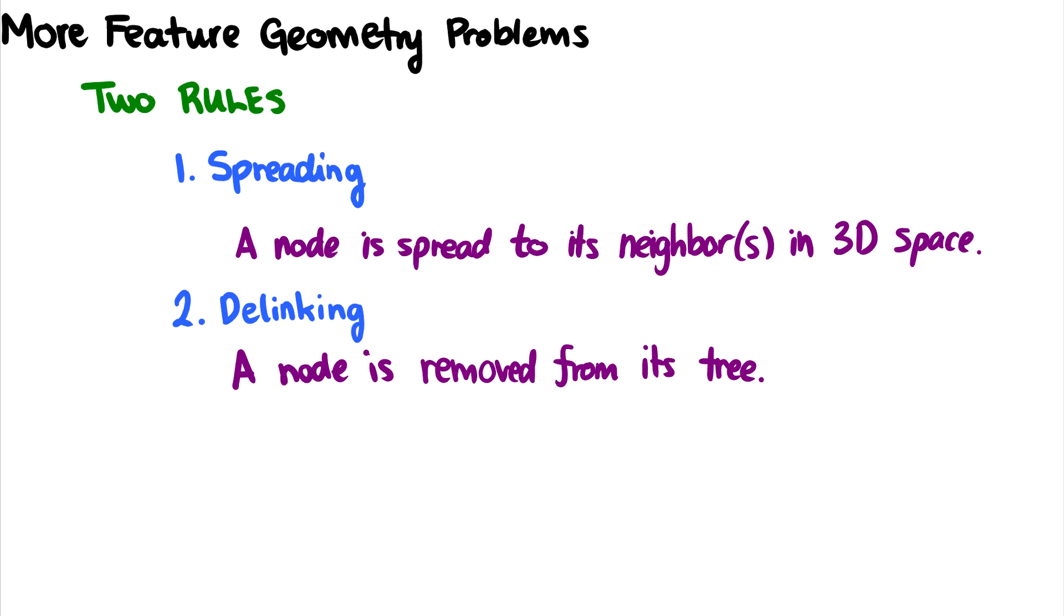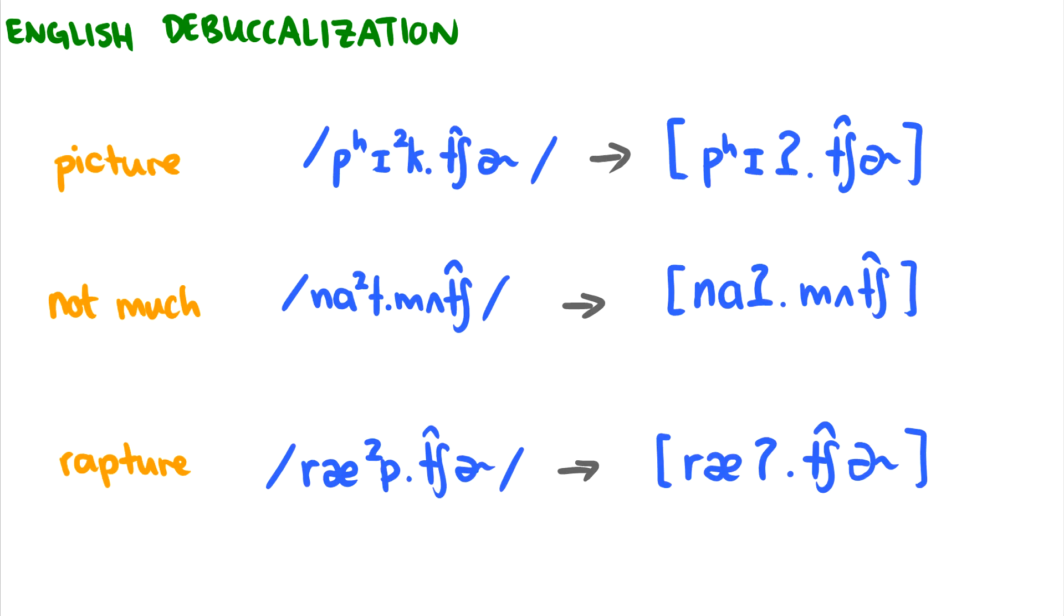In this video, we're going to do some more feature geometry problems in order to really demonstrate the two rules: spreading and delinking. Spreading is when a node is spread to its neighbors in three-dimensional space, and delinking is when a node is removed from its tree. We'll see this with a couple examples.